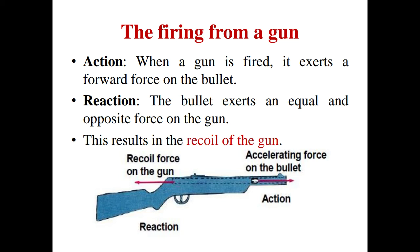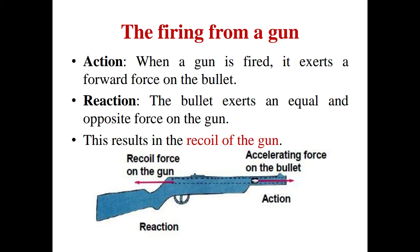The next example is the firing from a gun. When we fire a bullet from the gun, the bullet is going in forward direction. How? Because the gun is applying force on the bullet — that is the action force — and due to that force, the bullet is going in forward direction. According to Newton's third law of motion, there will be a reaction force in backward direction. So what you observe is that this gun will come back — when the bullet is fired, the gun is coming back.